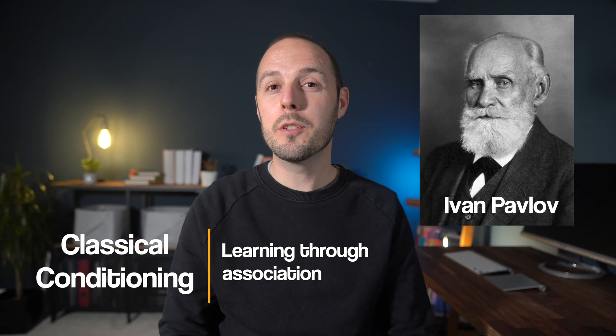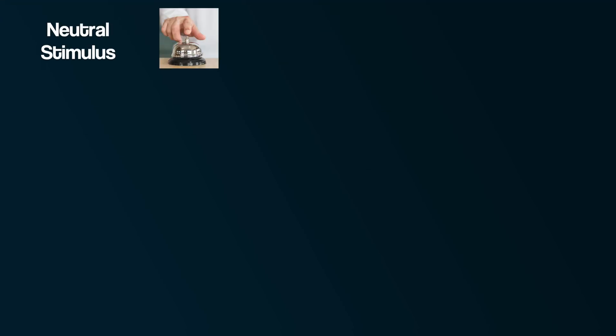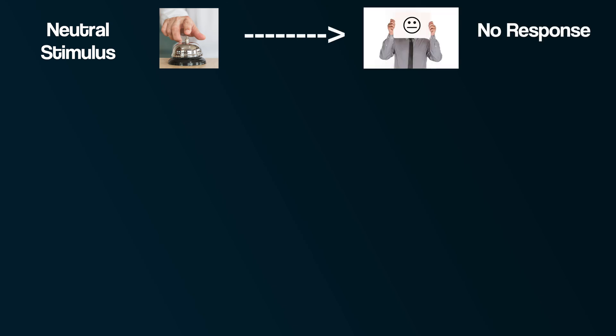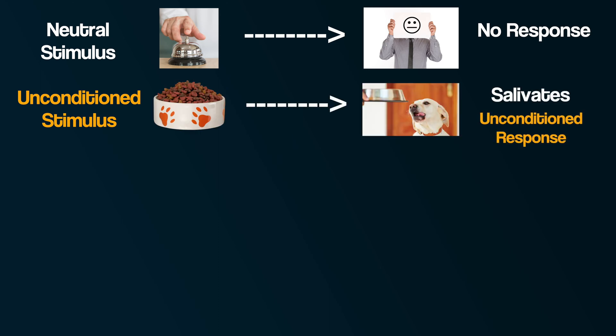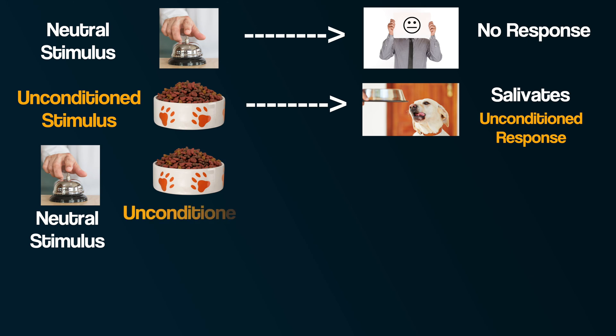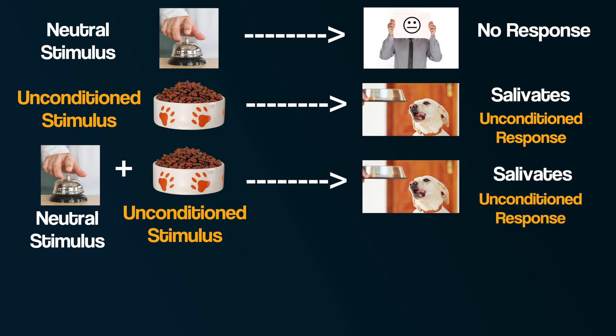Classical conditioning is learning through association. Pavlov wanted to see if he could associate dog food with a bell to see if dogs would salivate not when the food was presented, but at just the sound of a bell. We can explain the process through the following key terms. There is a neutral stimulus — in this case, the bell. It is neutral because a bell, in and of itself, doesn't produce a response other than perhaps looking at it when it rings. Then there is an unconditioned stimulus: the word 'unconditioned' means it has not been learned. When a dog is presented with food, it naturally salivates — the dog doesn't have to learn to produce saliva in response to food. The neutral stimulus (the bell) and the unconditioned stimulus (food) are then paired, or associated, together, which leads to the same response: salivation.